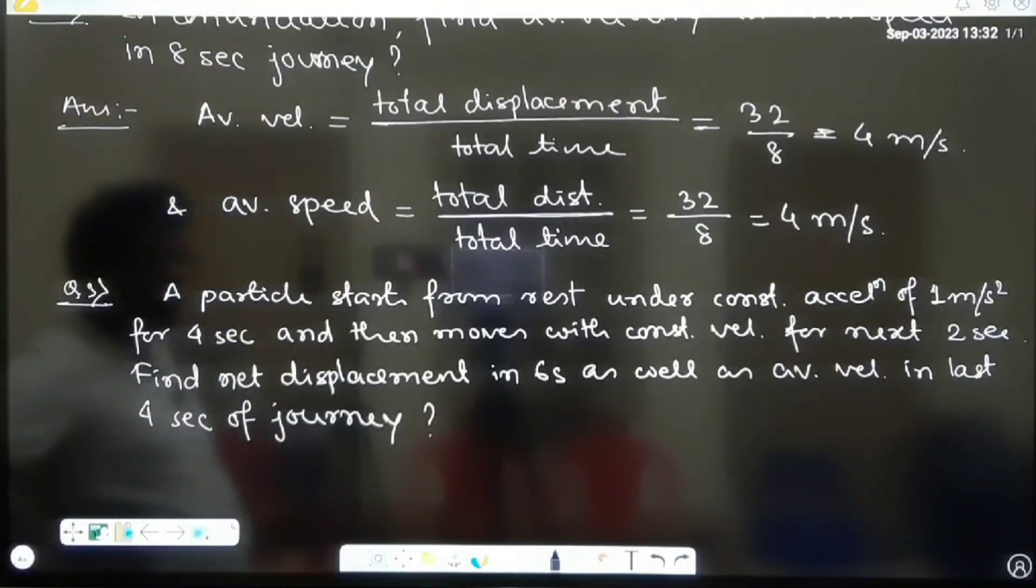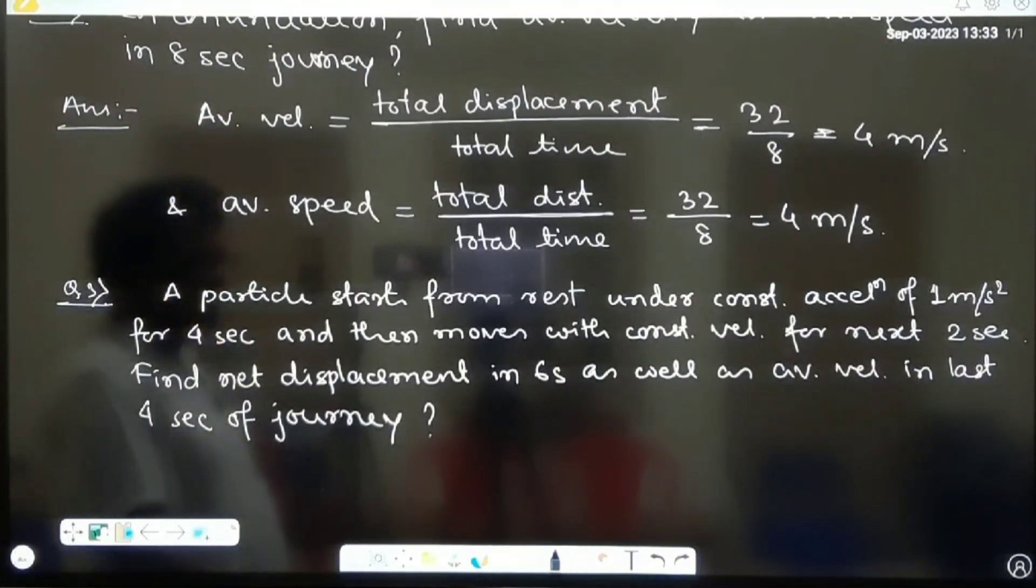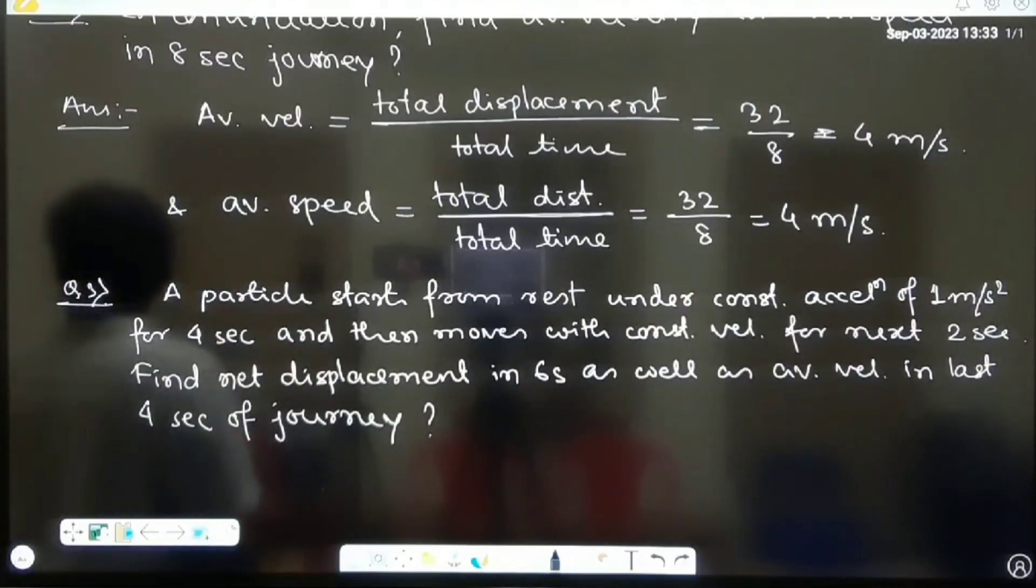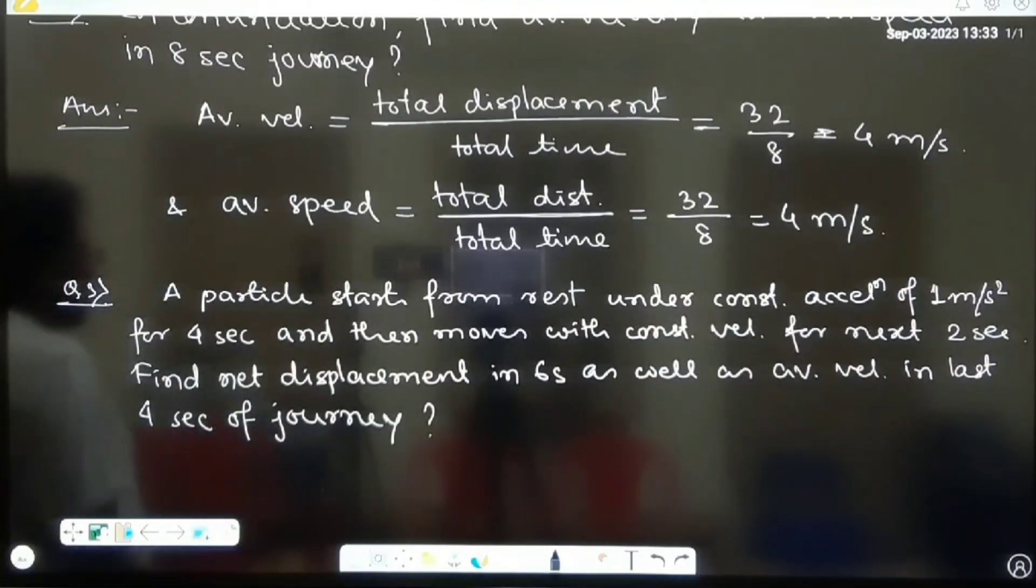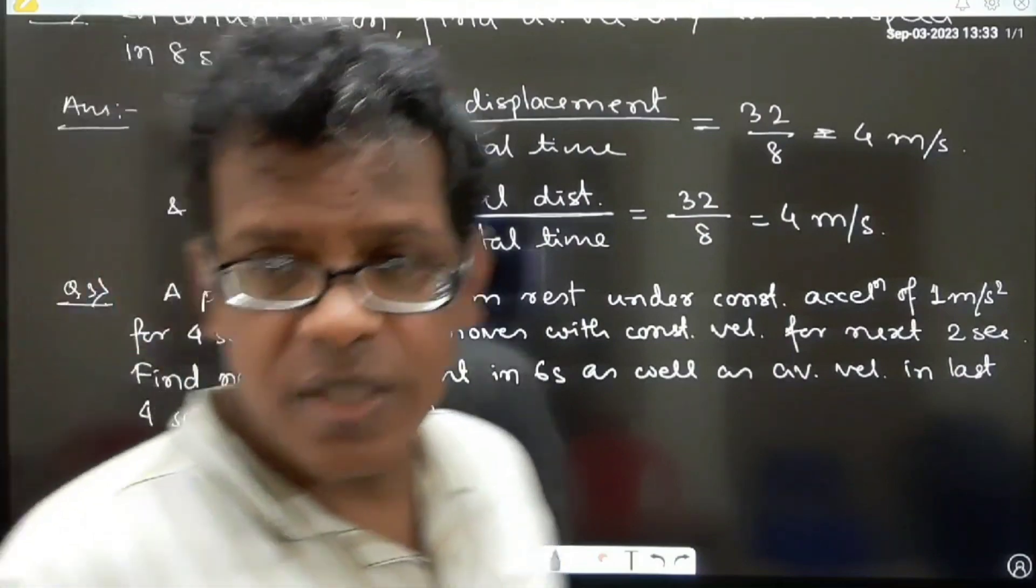This time I have mentioned that particle starts from rest and then though it starts from rest it can get into motion because it is moving under acceleration of 1 meter per second square and that is used for 4 seconds.